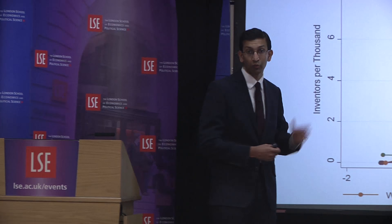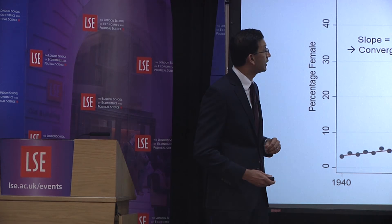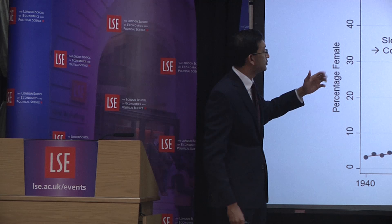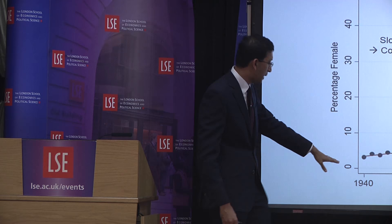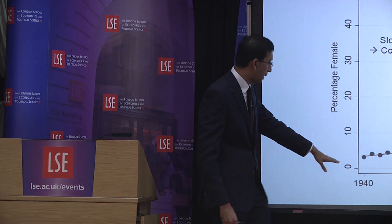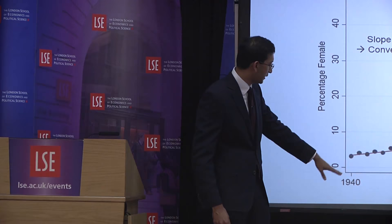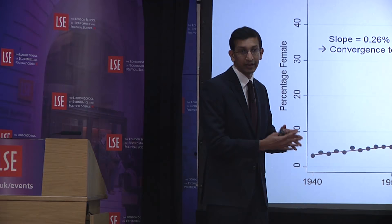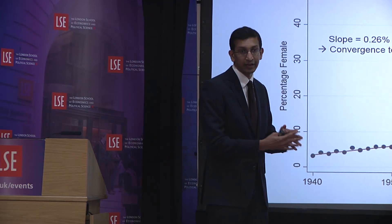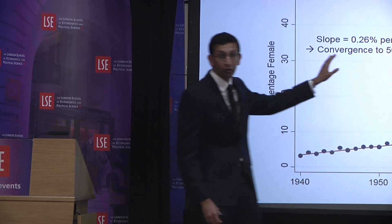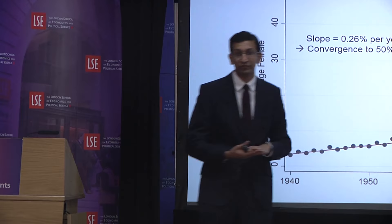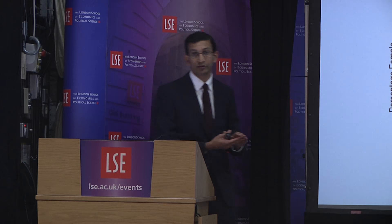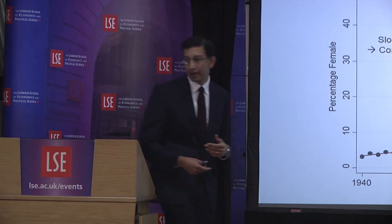We can also look at differences by gender over time. Back in 1940, only about 4% of patents went to women. That number has gone up steadily to about 15% today — but the rate of increase is only about a quarter of a percent per year, meaning it will take another 140 years to reach a 50-50 share in patenting. There's a really substantial gender gap in innovation that is closing at a very slow rate.